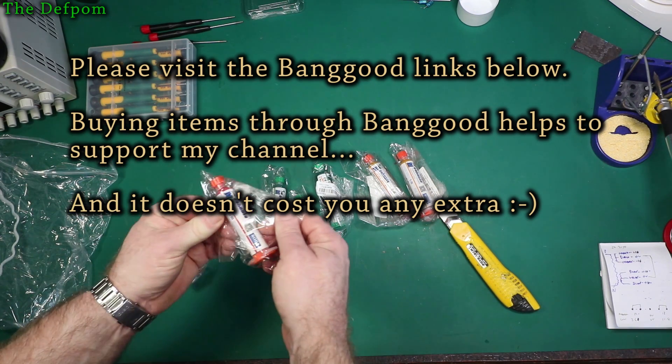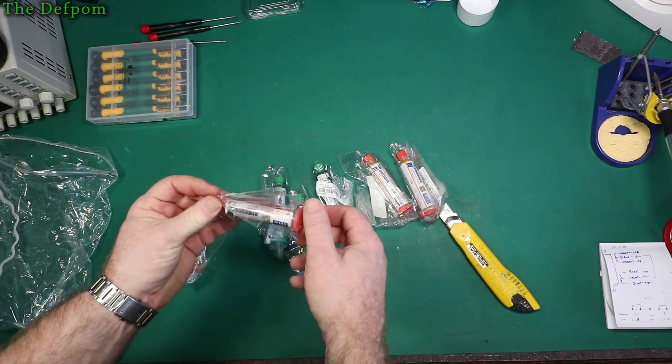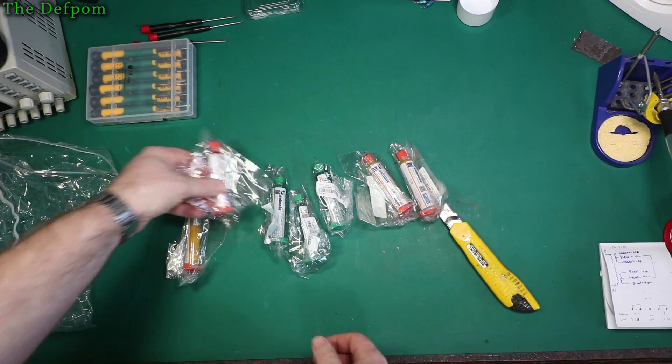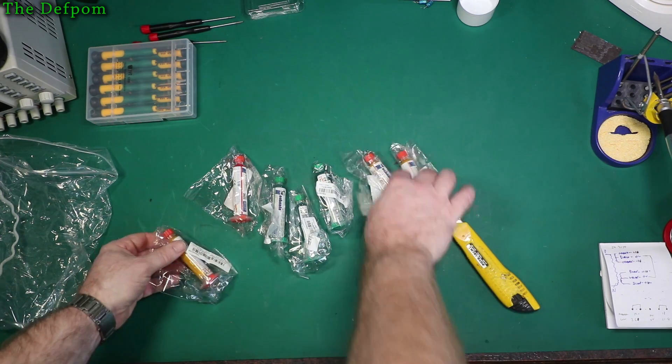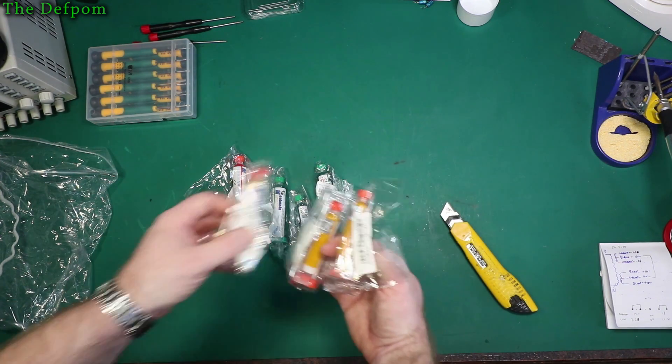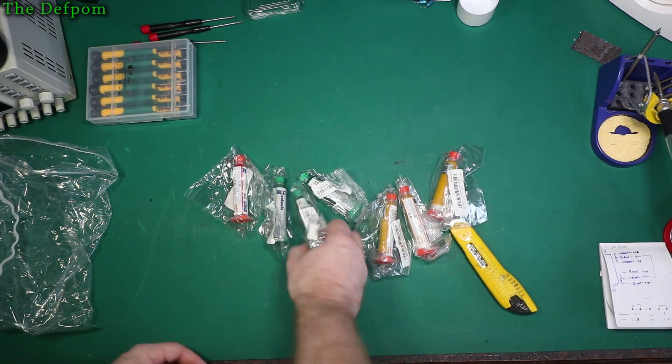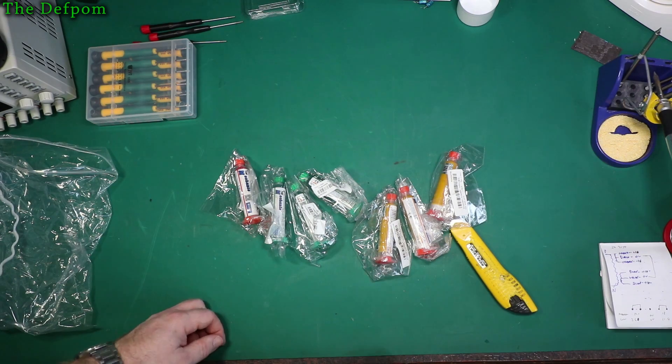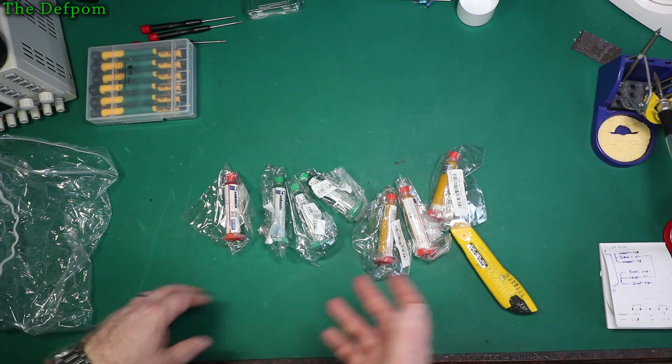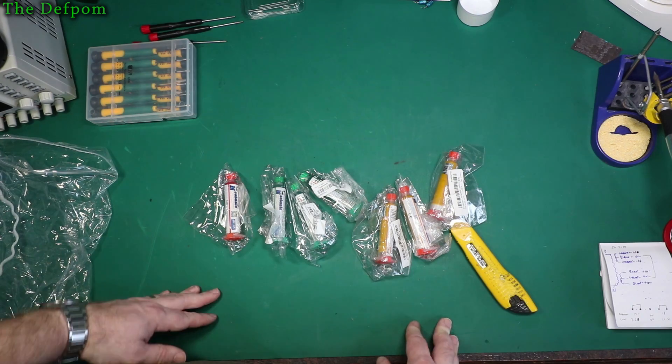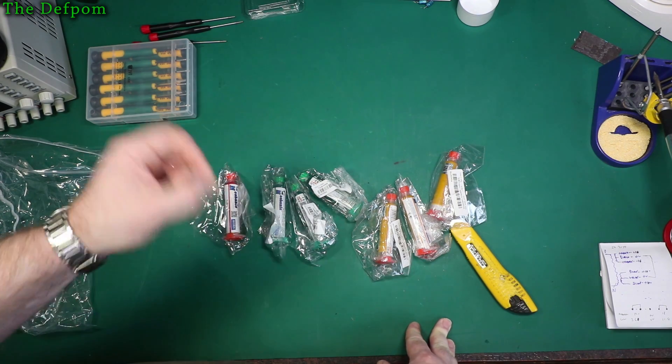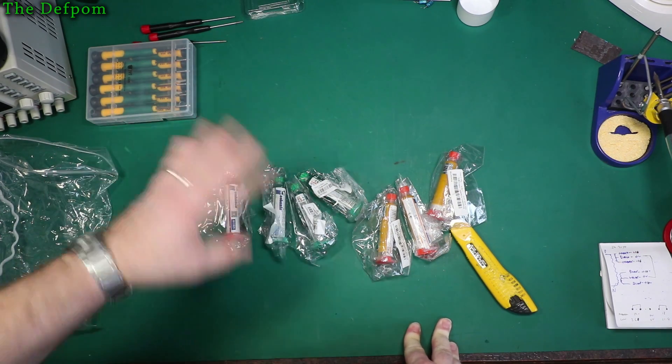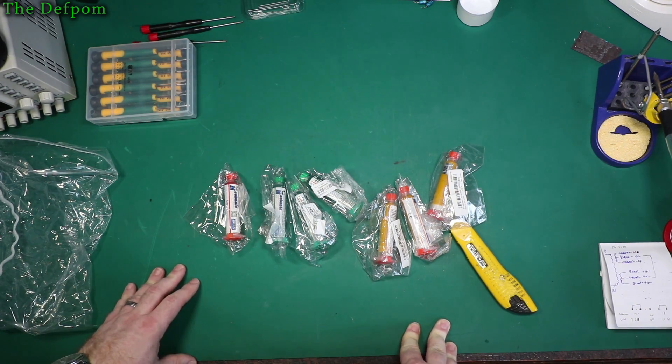What these are, are UV-curing solder mask. So you've got different ones. Obviously different colors. So you've got three of that color. Three green. And one red. So yeah. So if you're doing like a little touch up on a jumper wire. Or something. Or you need to repair something to stop it getting corroded. You know, you've done a patchwork and a bit of PCB and you want to cover it back up again. You can use some of this stuff.